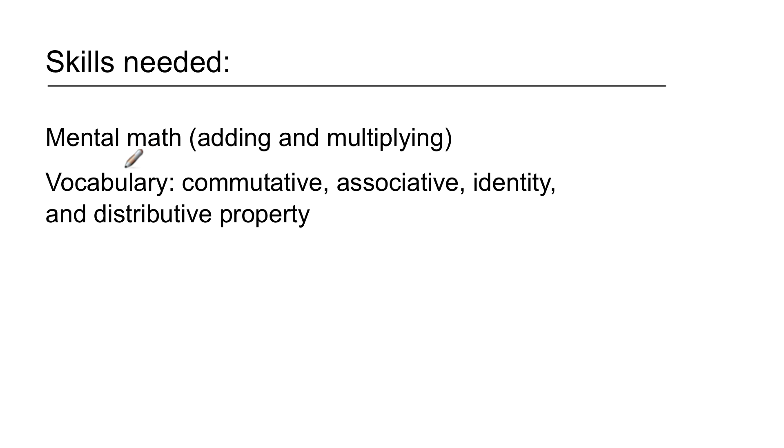The other one is the vocabulary. So when you're writing the names of the properties and you're saying the names of the properties in class, you want to use the correct term. So the first one, commutative. It's the commutative property.